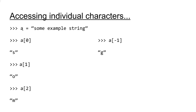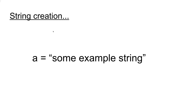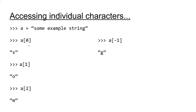Here we have the same string from the last slide, and we're able to access any of the elements. Here we're accessing the zeroth element, which is an S. Here we're accessing the first element, which is an O. And here we're accessing the second element, which is an M. The example on the right is showcasing a unique feature of the Python bracket operator — we can access elements starting from the end of the string using negative rather than positive numbers.